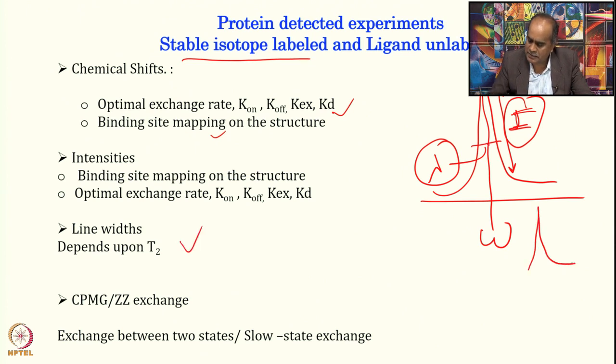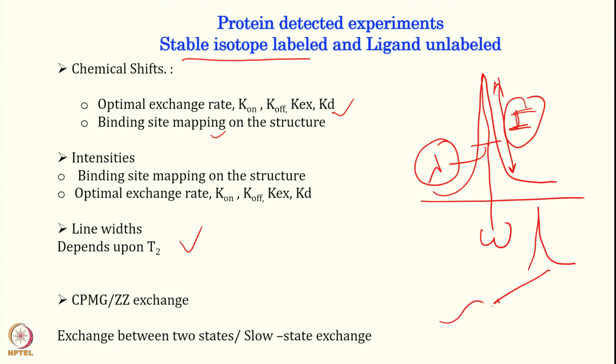For an unliganded protein you have a sharp line; once it binds, you go to a broad line. That broadening tells about the binding phenomena. We will also be discussing techniques like CPMG, which is used for determining the lowly populated state in protein-ligand interaction or even protein conformational change, and ZZ exchange. Depending on what we want to probe: CPMG probes the exchange between two states when they are in intermediate exchange, and ZZ exchange can be used when they are slowly exchanging.